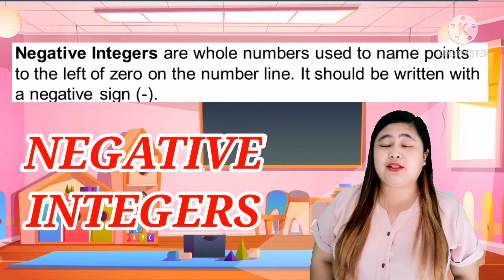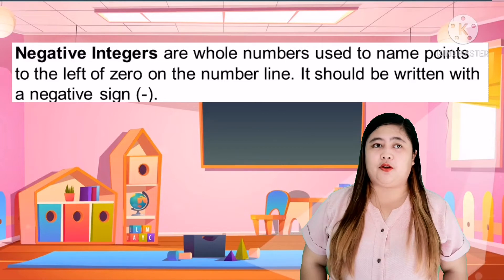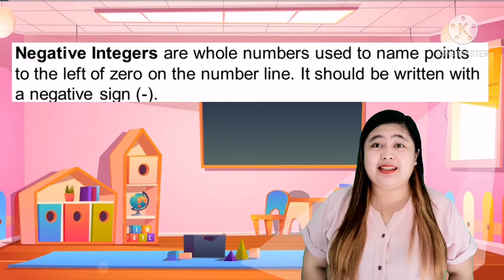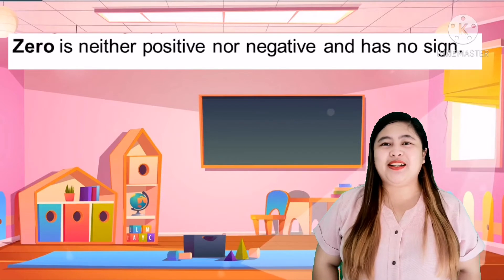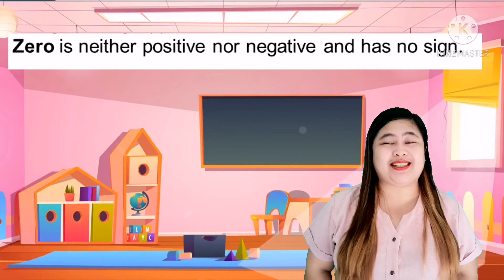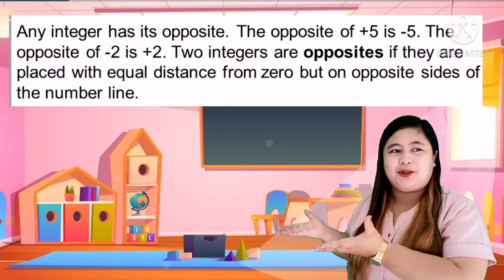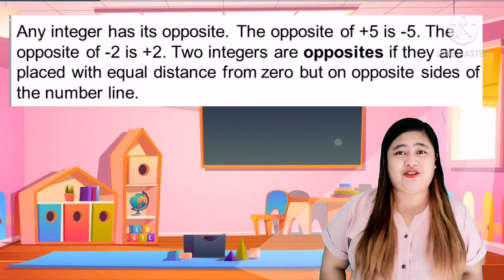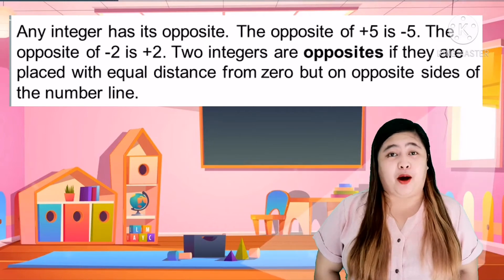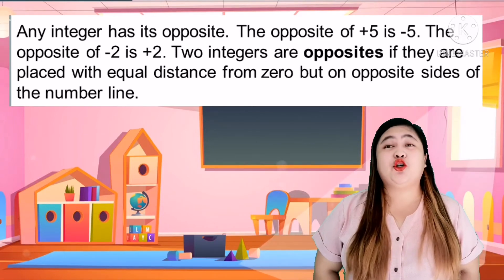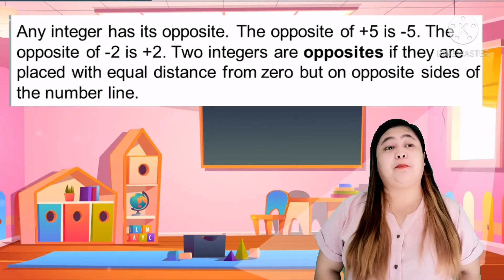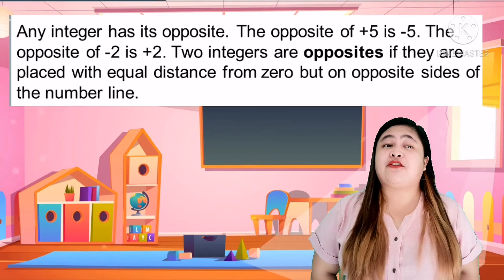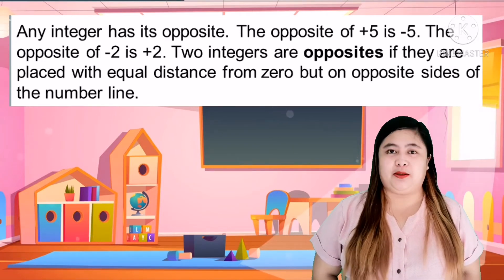Negative integers, on the other hand, are whole numbers used to name points to the left of zero on the number line. They should be written with a negative sign. Zero is neither positive nor negative and has no sign. An integer has its opposite — the opposite of positive 5 is negative 5, and the opposite of positive 2 is negative 2. Two integers are opposites if they are placed equal distance from zero but on opposite sides of the number line.